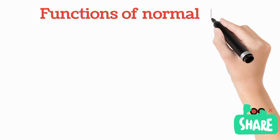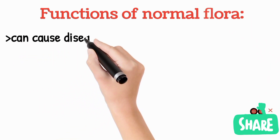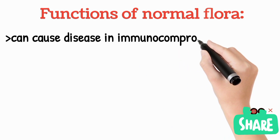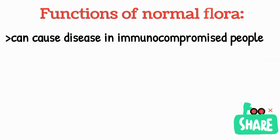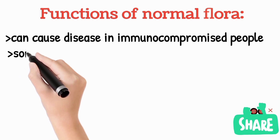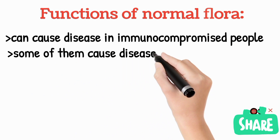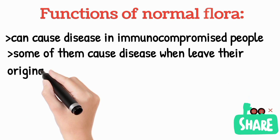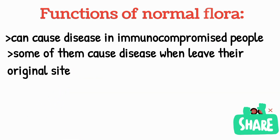Functions of normal flora: they can cause diseases in immunocompromised people — in immunocompetent people they cannot cause disease. Only when the immune system becomes compromised can normal flora invade. Some usually cause disease when they leave their original site — flora present on the skin and intestine may not cause disease there, but when they migrate to the blood they can cause disease.